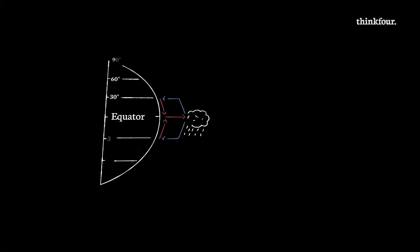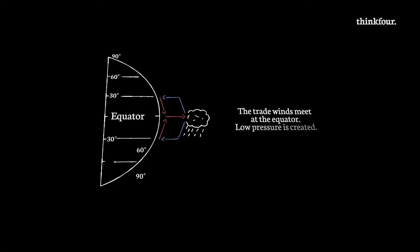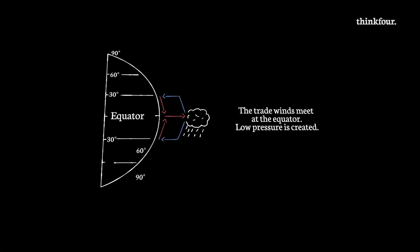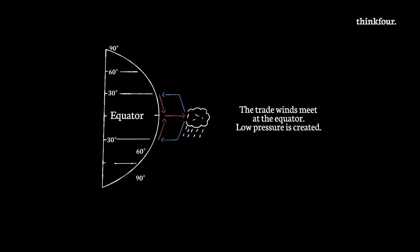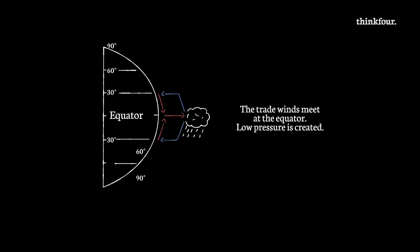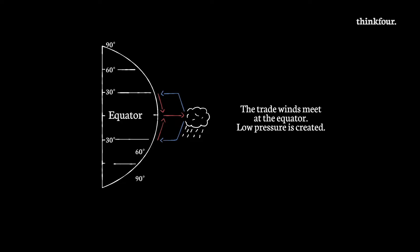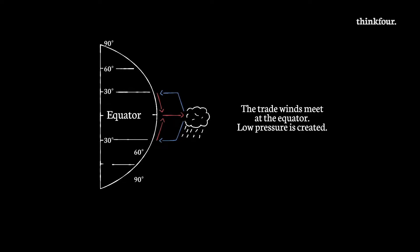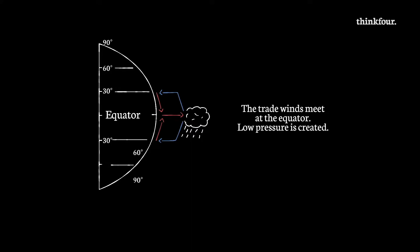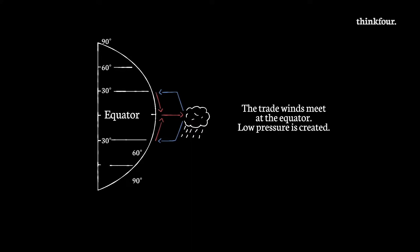Where the trade winds meet at the equator, a zone of low pressure is created. Here, warm air rises through convection. As it does so, it draws in air from 30 degrees north and south. As the warm air rises, it chills and condenses to cause storm clouds and heavy rain.